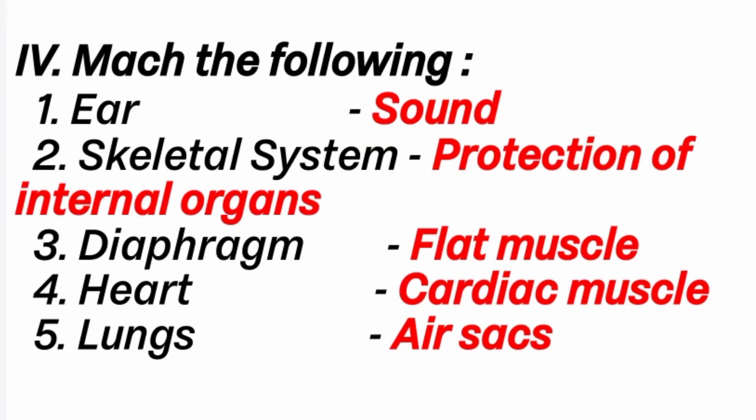Match the following. First: ear — the ear is one of the sensory organs used for hearing sound. Second: skeletal system — the skeletal system is used for protection of internal organs. Third: diaphragm — the diaphragm is a flat muscle used to separate the thoracic region and abdominal region.